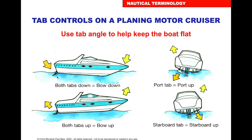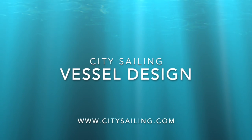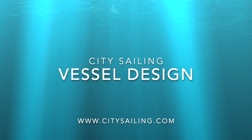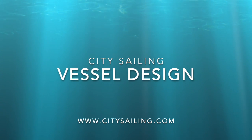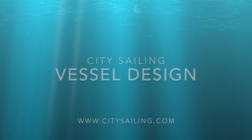The flaps at the back can move down or up to adjust the trim of the bow - pushing both flaps down brings the bow down, lifting them up brings the bow up. With a side wind you can adjust the flaps or tabs to stabilize the boat. That's an introduction to vessel design - thank you for watching, please like and subscribe and have a look at the tutorials from Essential Navigation and Day Skipper. Thank you very much - Paul, City Sailing.